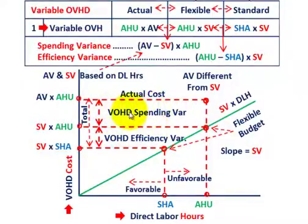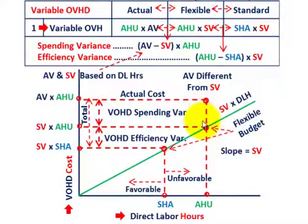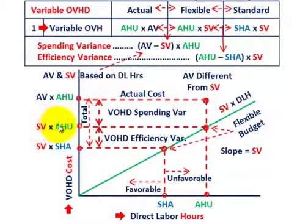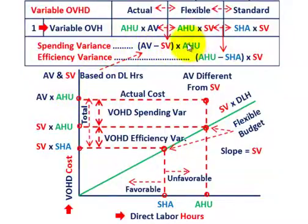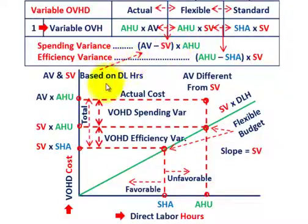Our variable overhead spending variance is the difference between the actual variable rate and the standard variable rate, based on the actual hours used. That difference is our spending variance. It's the difference between the standard variable rate times actual hours used and the actual variable rate times actual hours used — actual hours was the common factor between our flexible and actual amounts.